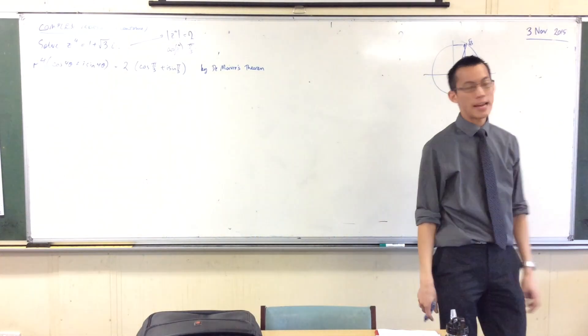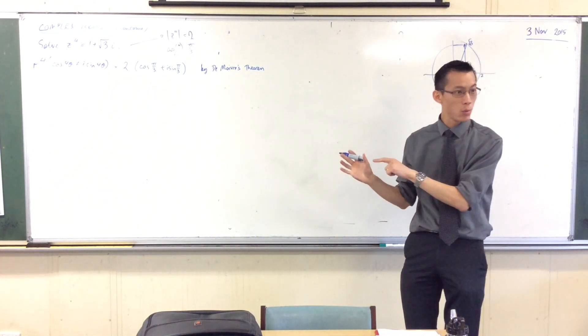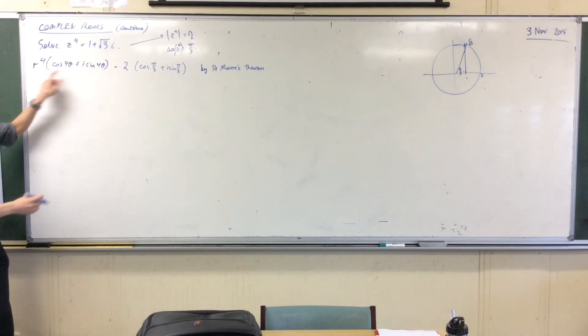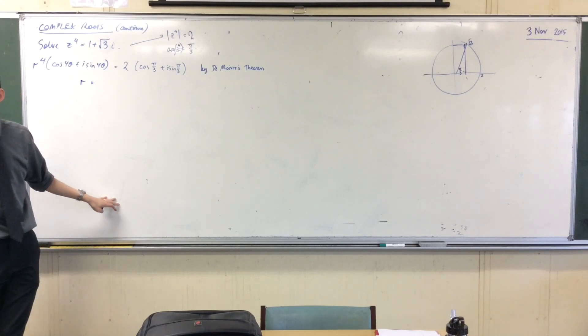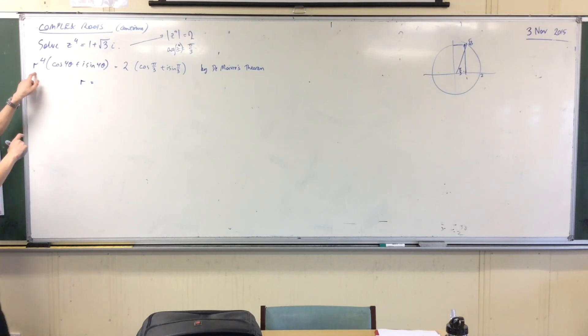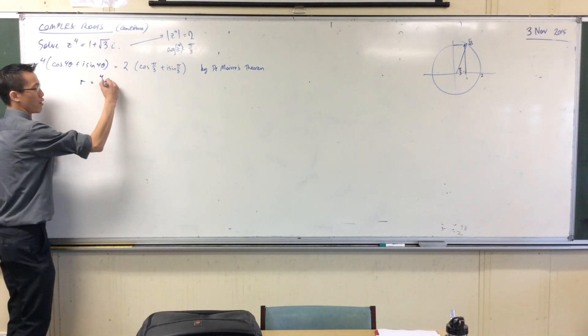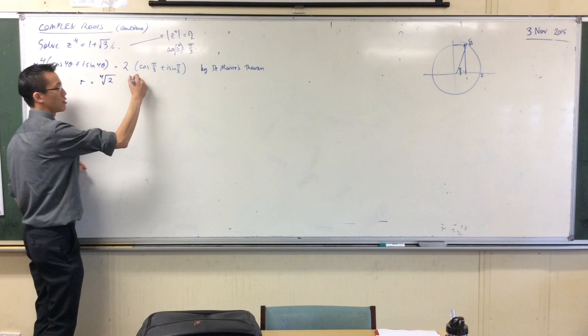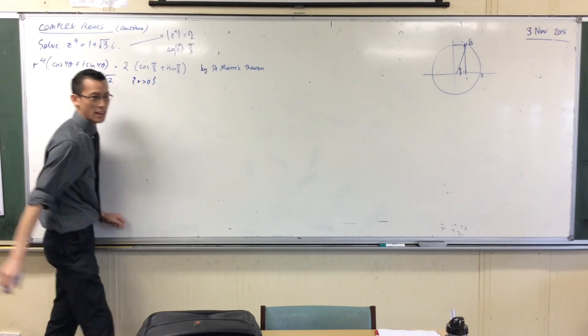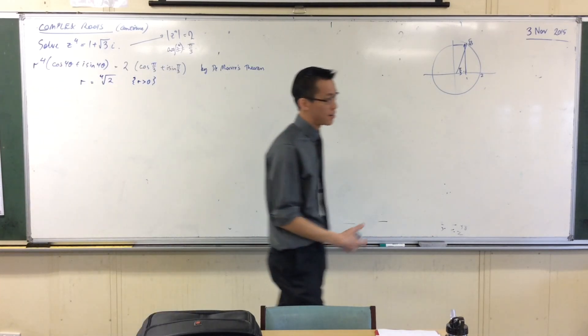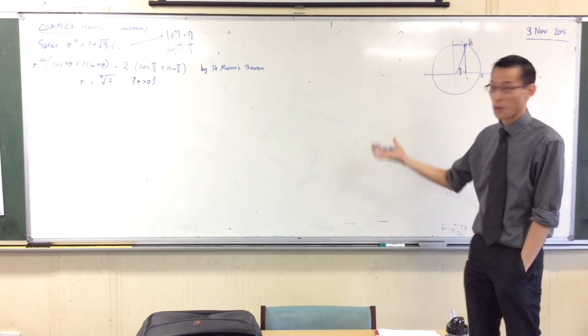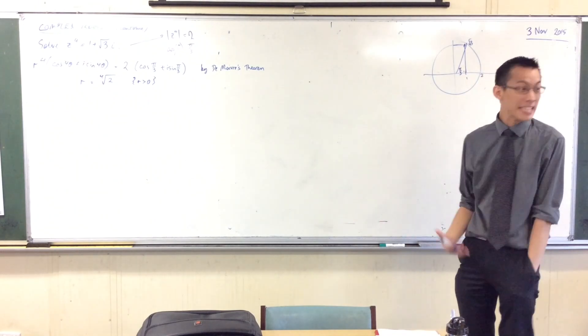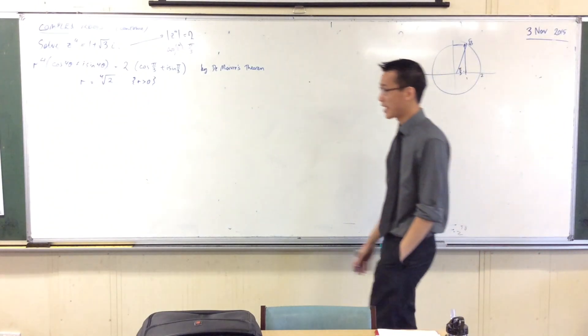And now I'm ready to actually start computing this. I can see straight away what the modulus is going to be because I can say r to the 4 is equal to 2, so r is equal to the fourth root of 2. Now be careful, because it's r to the 4 equals 2, I don't take the square root or the cube root, I take the fourth root. So it's the fourth root of 2, whatever that happens to be. I should state that it's a modulus, r is greater than 0, because there is more than just one fourth root of a complex number, and 2 is in the complex numbers. There's r.